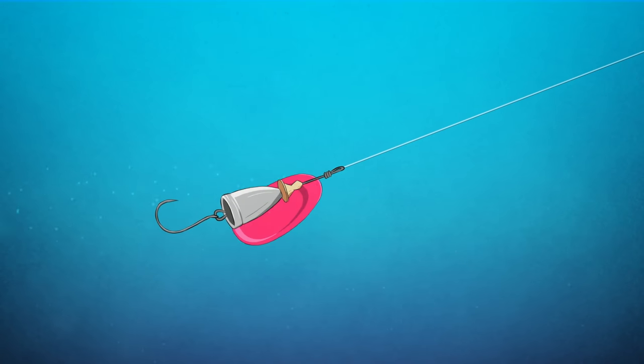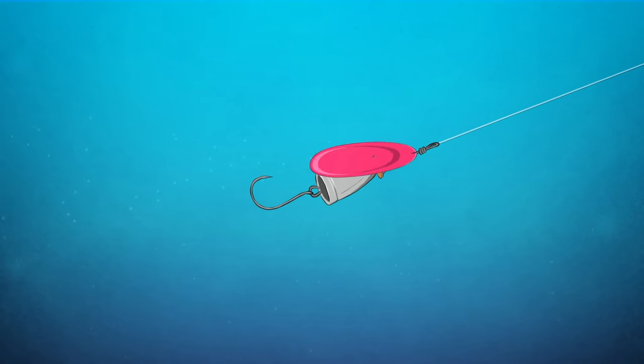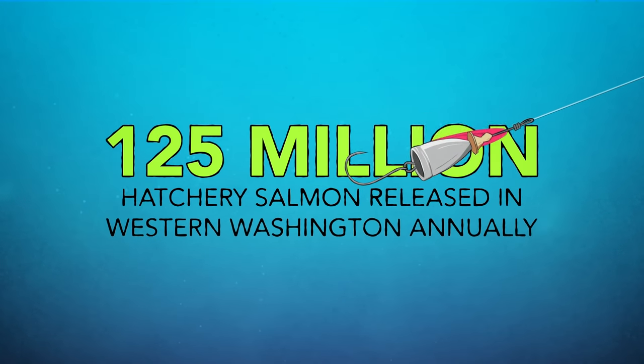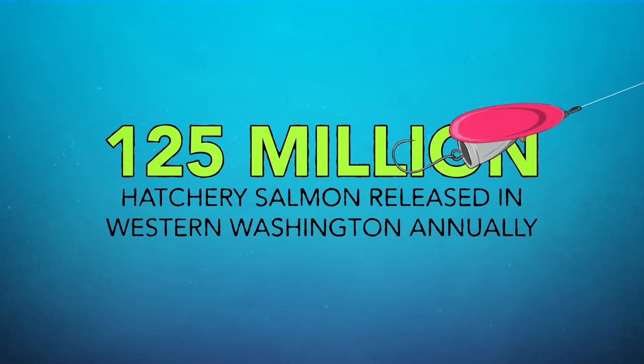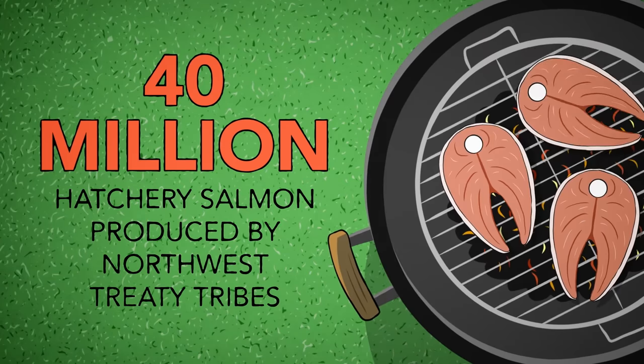Most hatcheries were built as mitigation for lost and damaged habitat and provide fish for commercial, sport, and treaty-protected tribal fisheries alike. Of the nearly 125 million salmon released every year in Western Washington, about 40 million are produced by Northwest treaty tribes.